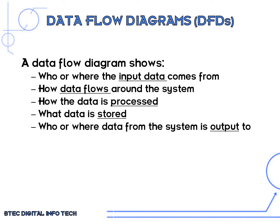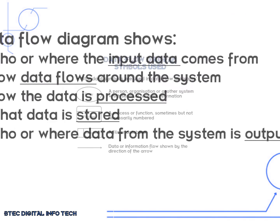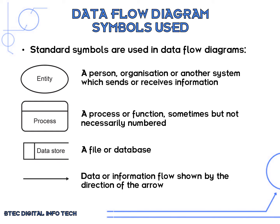Data flow diagrams, just as a recap, show who or where the input data comes from, how data flows around the system, how the data is processed, what data is stored, and who or where the data from the system is output to. On some of the more complex data flow diagrams, the oval shape is for a person, organization, or another system which sends or receives information. The rounded rectangle is a process or function, sometimes numbered. The rectangle is for a file or database where something is stored, and the arrows show the information flow by direction.